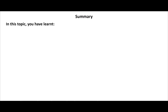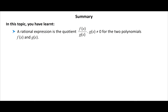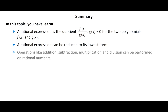In this topic you have learnt: a rational expression is the quotient f(x) divided by g(x) where g(x) is not equal to 0 for the two polynomials f(x) and g(x); a rational expression can be reduced to its lowest form; and operations like addition, subtraction, multiplication, and division can be performed on rational expressions.